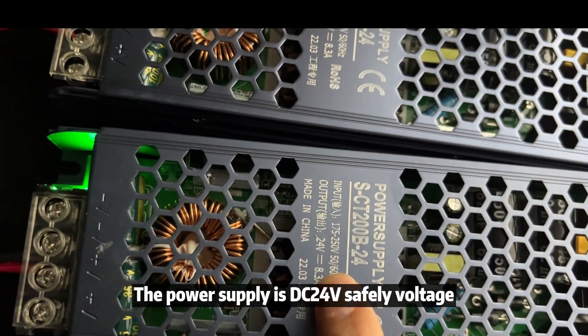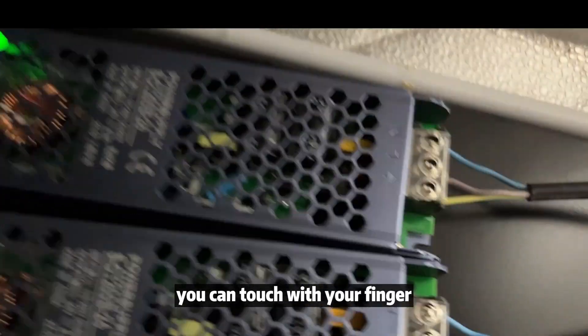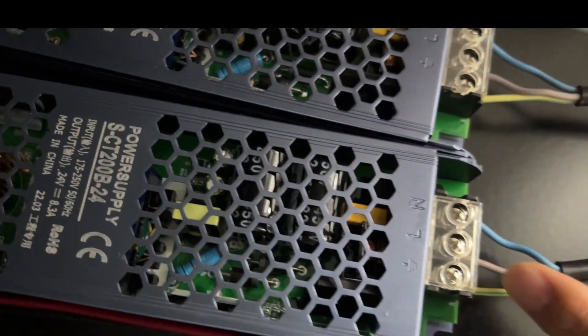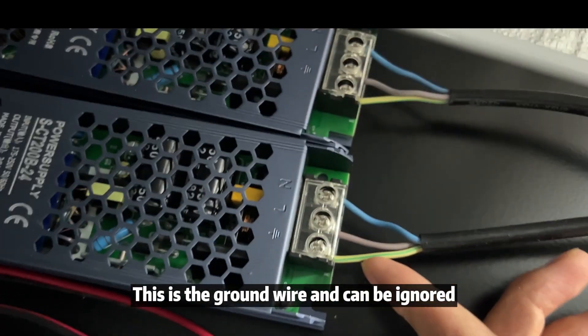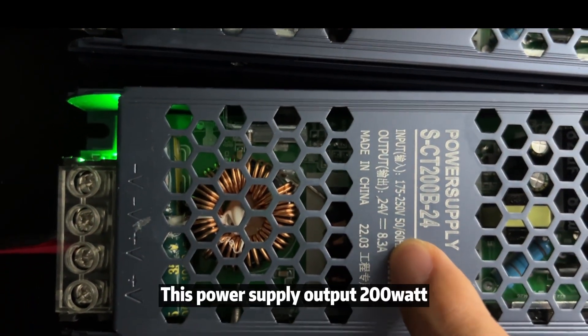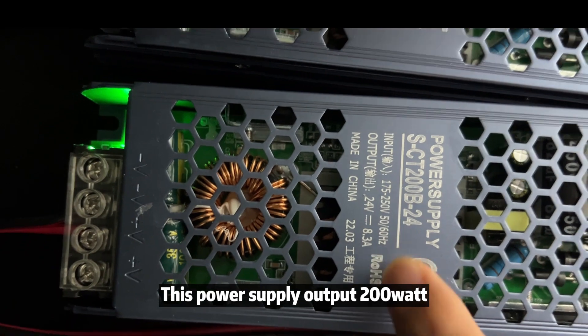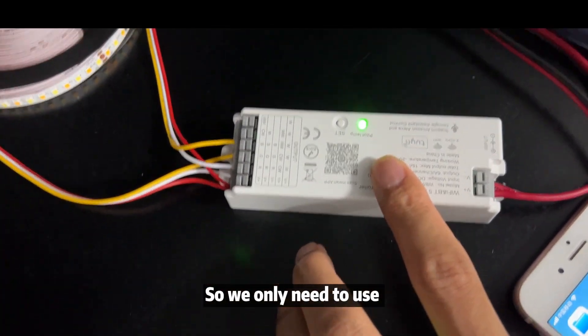The power supply is DC 24V safe voltage. You can touch with your finger. This is AC input. N and L does not need to differentiate. This is the ground wire and can be ignored. DC 24V, 8.3A. This power supply output 200W. The two rows of LED strips are 16 meters. So we only need to use a 200W power supply to light a 20 meter LED strip.